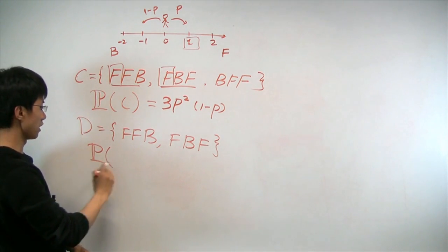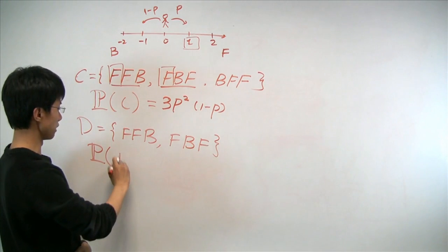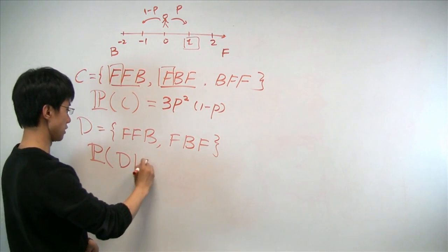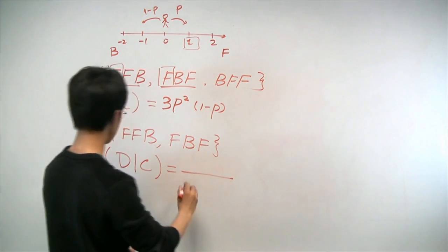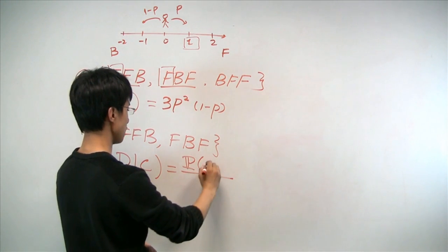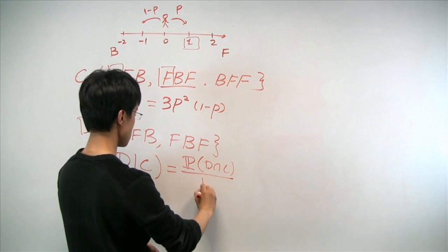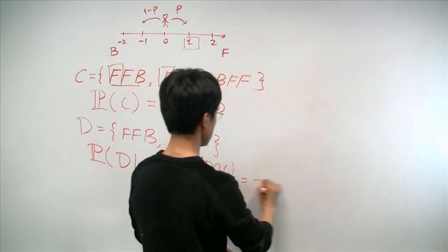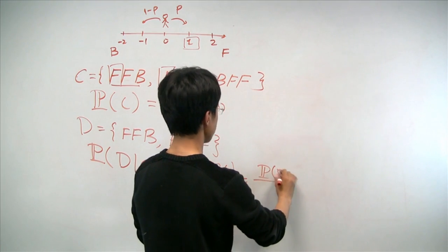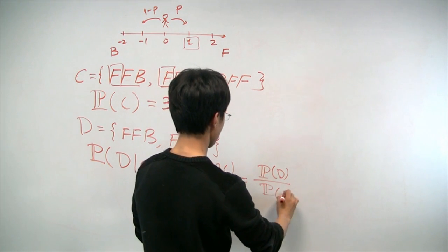Now, the probability we're interested in is simply probability of D conditional on C. We write it out using the law of conditional probability, D intersection C, conditional on C. Now, because D is a subset of C, we have probability D divided by the probability of C.